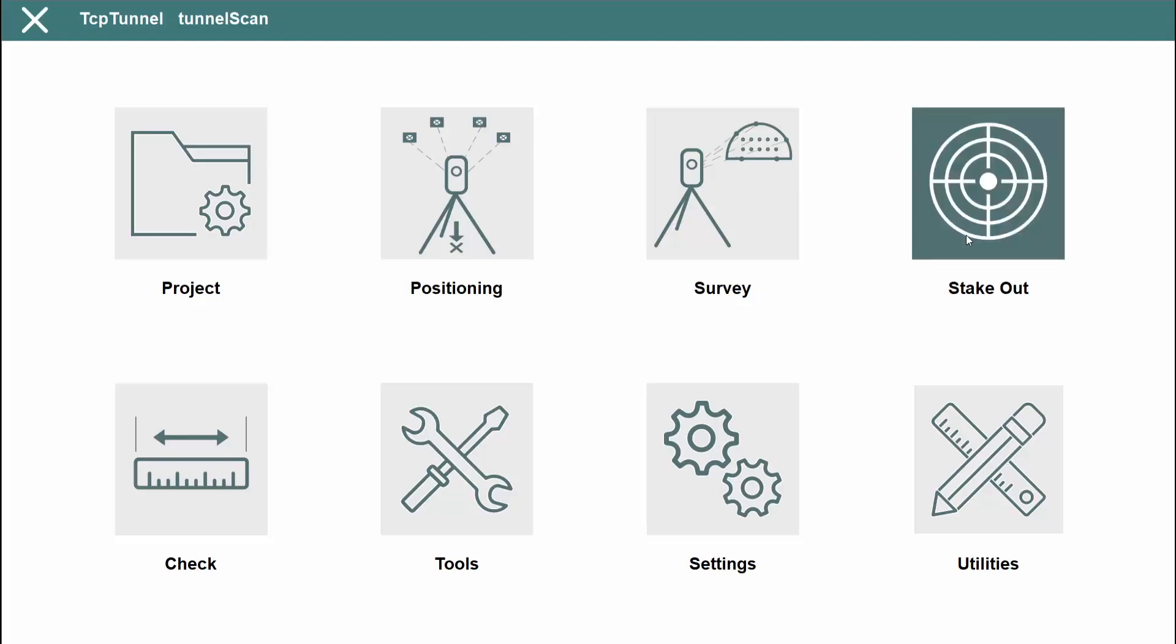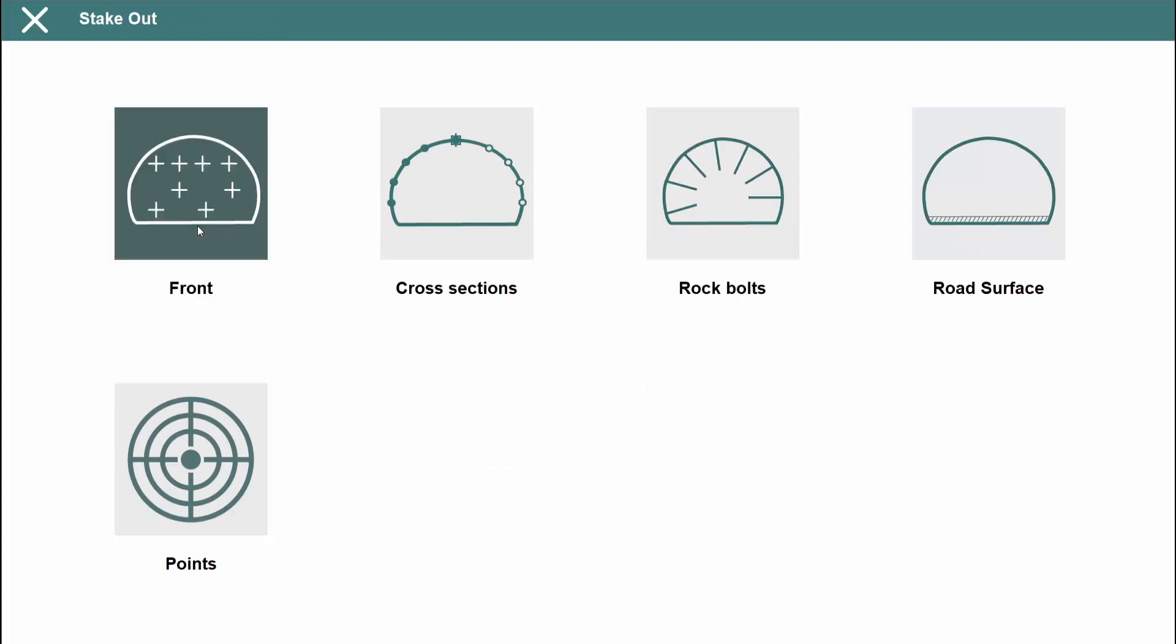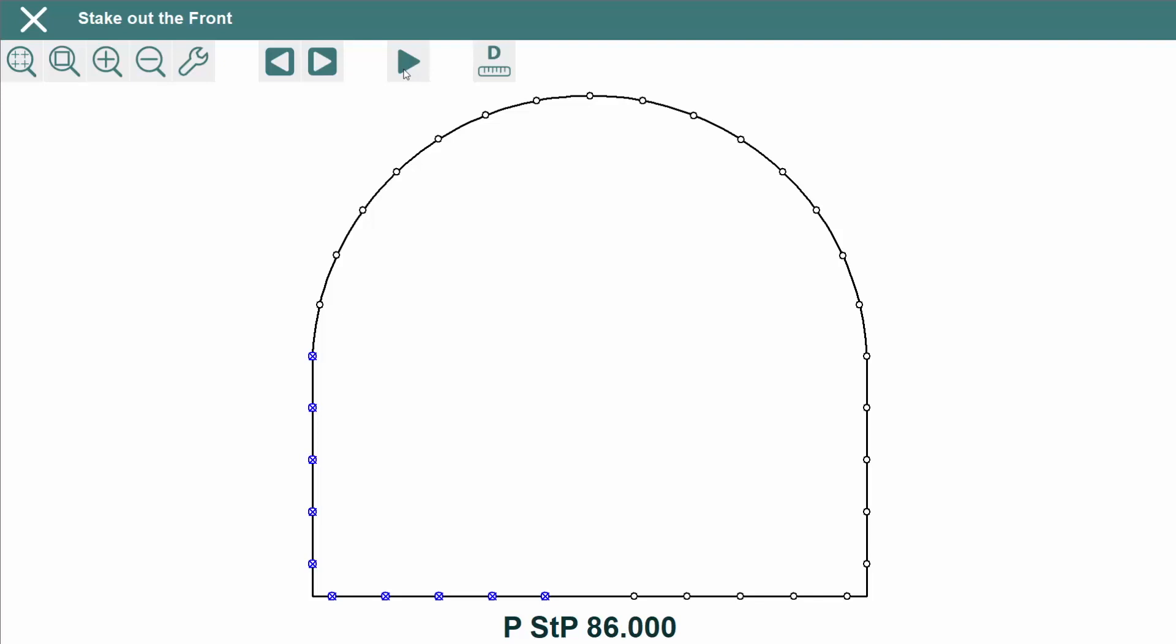TCP Tunnel Scan facilitates the stakeout of the tunnel front. For example, the drill hole points for the next blasting excavation sequence, points on the template, rock bolts, road surface, and points of the project file.